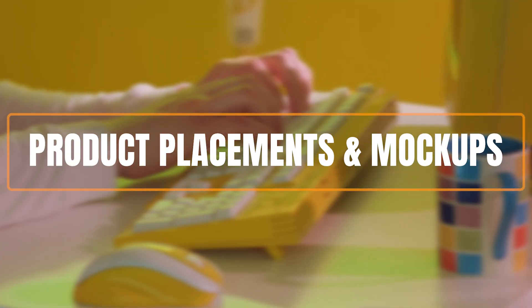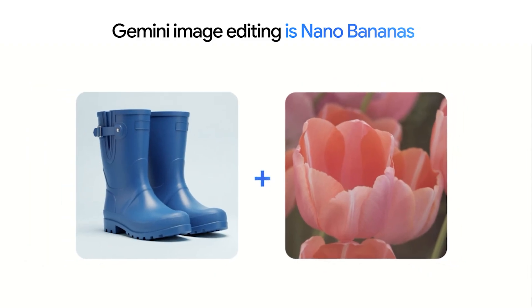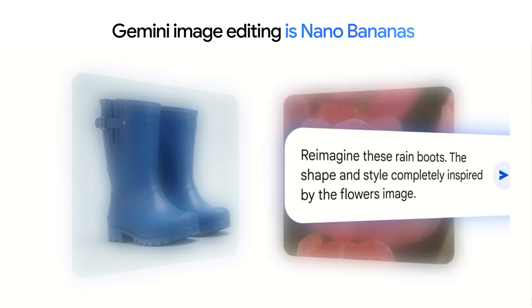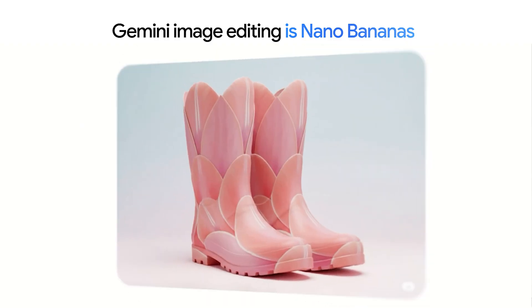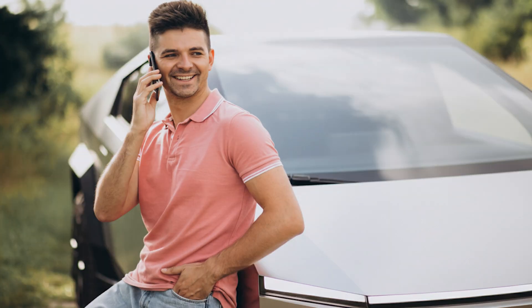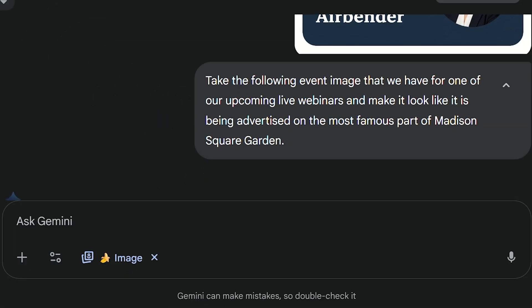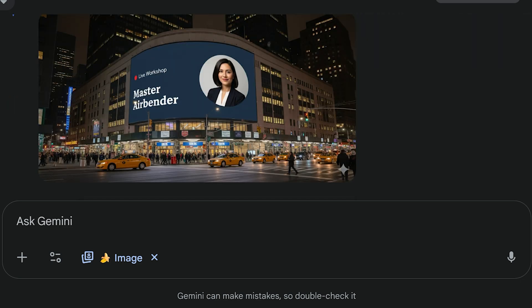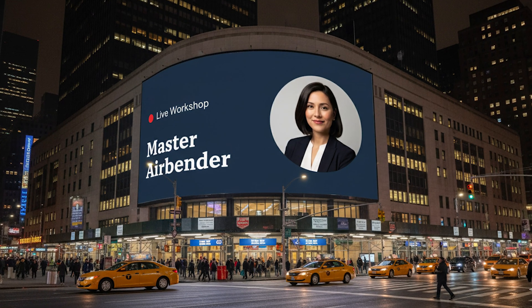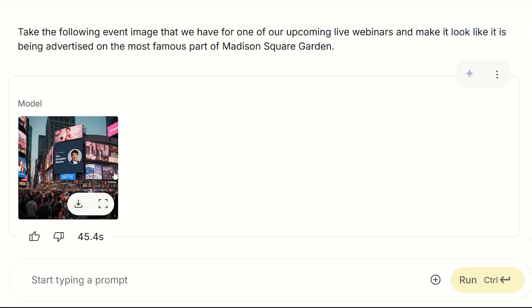Number 5: Product Placements and Mock-ups. Another fantastic way to use Nano Banana is its ability to help you create images that boost your business. For example, you can create an event image and make it look like it was advertised in Madison Square Garden — and you can do this in a matter of seconds. This feature is applicable for almost all occasions or events.